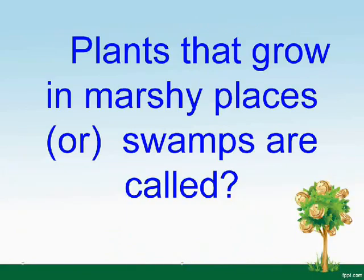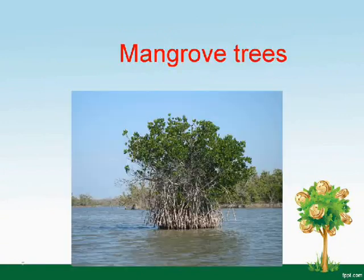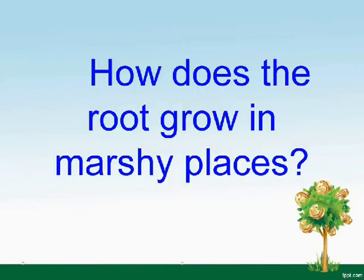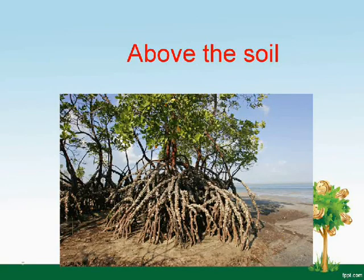Plants that grow in marshy places or swamps are called mangrove trees. How do the roots grow in marshy places? Above the soil.